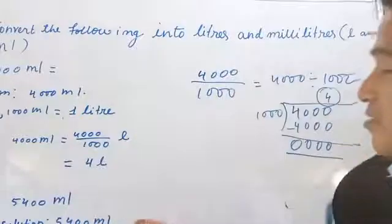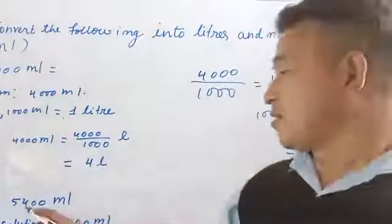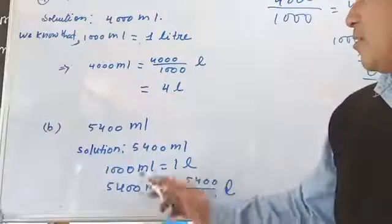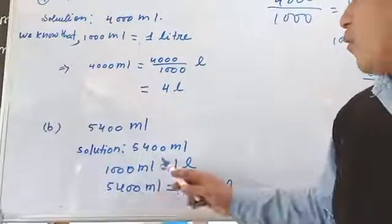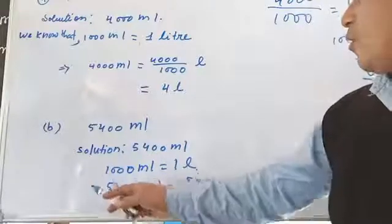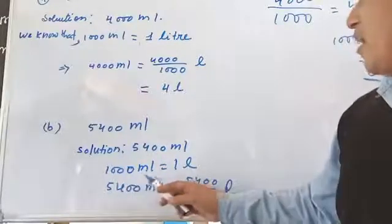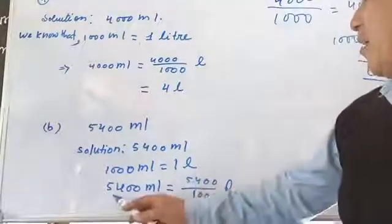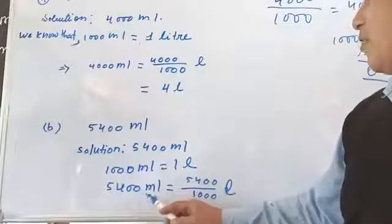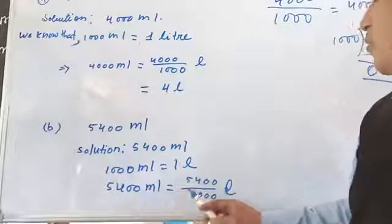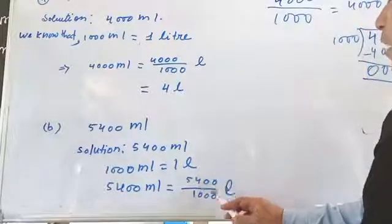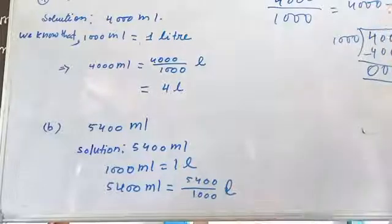The same thing is done here. Here is 5400 milliliters. So 5400 milliliters — we know that 1000 ml is equal to 1 liter. And 5400 milliliters is equal to 5400 divided by 1000.